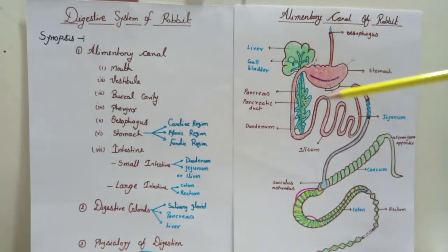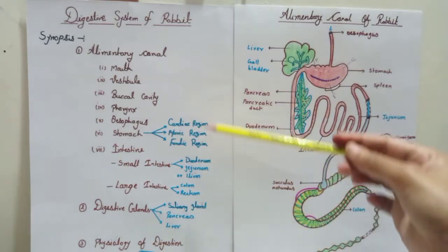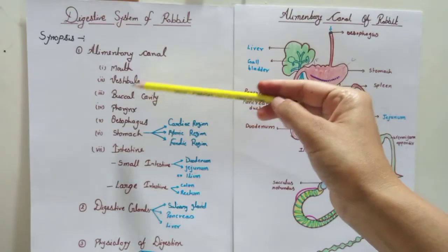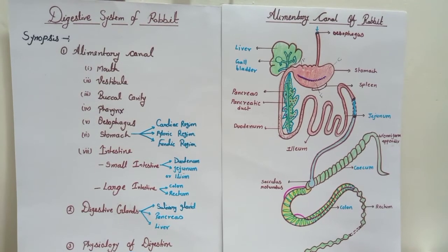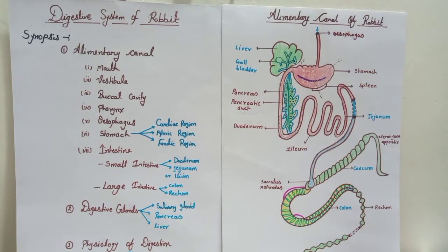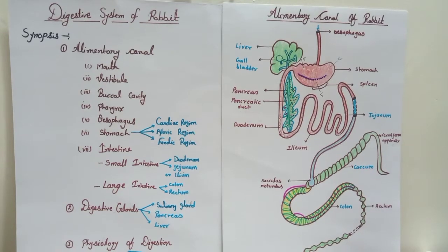Next are the digestive glands. There are three digestive glands: salivary gland, pancreas, and liver. The salivary gland is present in the buccal cavity. There are four types of salivary glands: parotid gland, infraorbital gland, submaxillary gland, and sublingual gland. All secrete mucus and saliva. The saliva contains mucin and one enzyme called ptyalin. Mucin moistens and lubricates the food, and ptyalin enzyme digests starch to maltose.